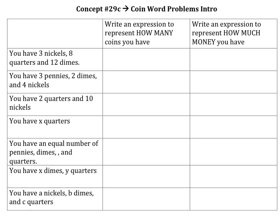We are going to do a quick introduction to coin word problems, because I want you to be thinking about coins just in general. So the first question — you have three nickels, eight quarters, and twelve dimes. What I want you to do is write an expression to represent how many coins you have.